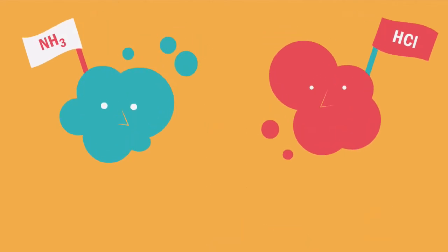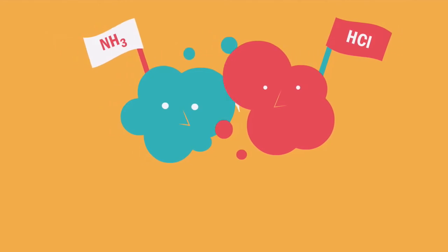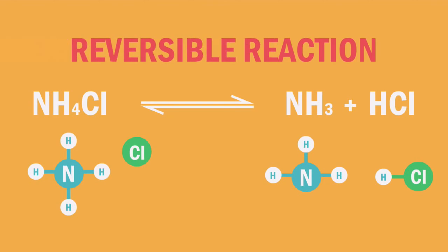The formed ammonia and hydrogen chloride have reacted to produce ammonium chloride. Therefore, this is a reversible reaction.